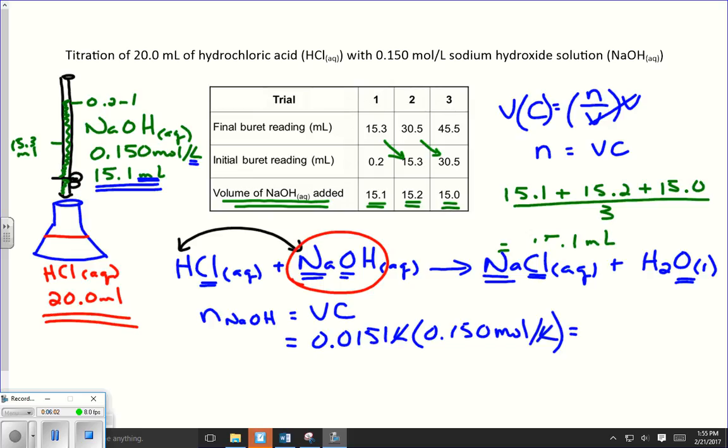And let's just do this on the calculator. So 0.0151 times 0.15. And I get an answer of, in moles, 0.002265 moles. Now I'm not rounding that off. I'm going to keep all those digits because I'm going to need to use that number of moles in my next calculation.